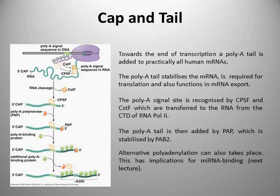Once capping is complete, towards the end of transcription, the mRNA is modified by the addition of a poly-A tail. The poly-A tail refers to around 200 adenine residues that are added to the end of the mRNA.